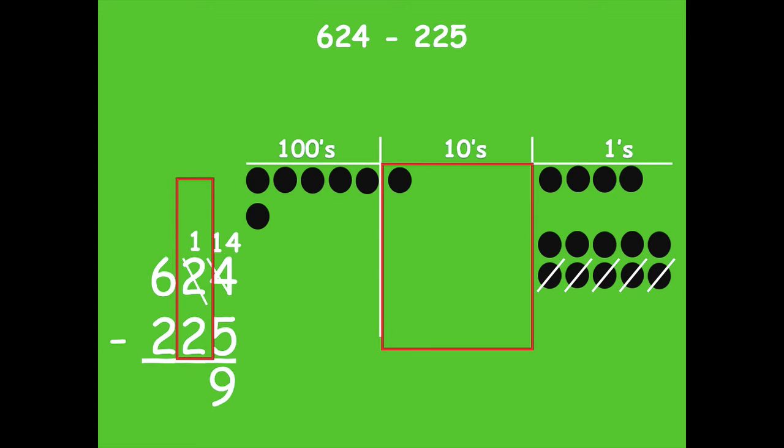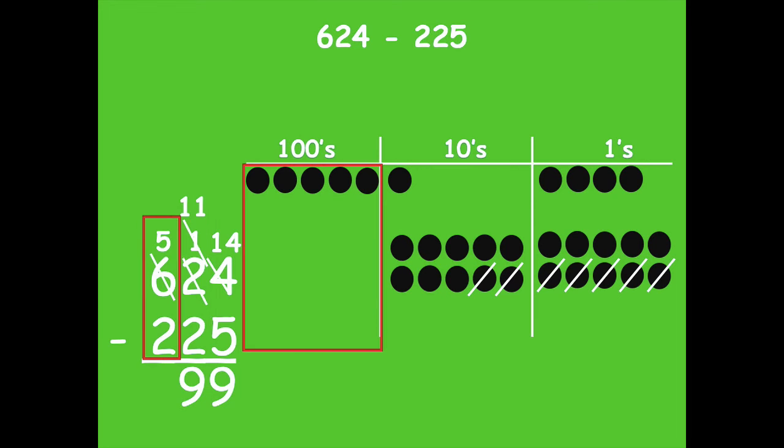I'll move over to my tens place. I only have one ten. I can't take away two. So I'm going to decompose 100 into ten tens. Let's model that now. So we have five hundreds and eleven tens. Now I have enough to take away two tens, and I'm left with nine tens. Then we move to our hundreds place. I have enough to subtract here. I don't have to do any more decomposing. So now I subtract two hundreds and I'm left with three hundreds. So 624 minus 225 equals 399.